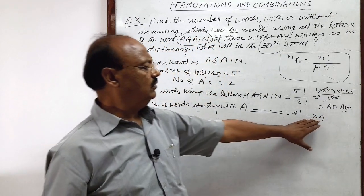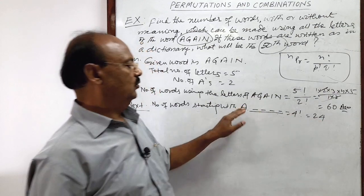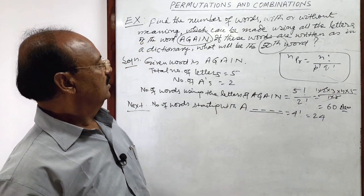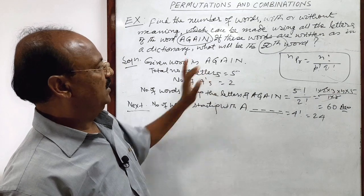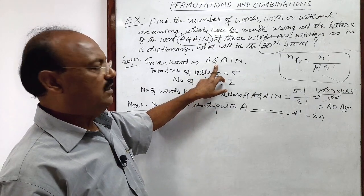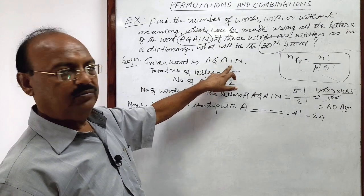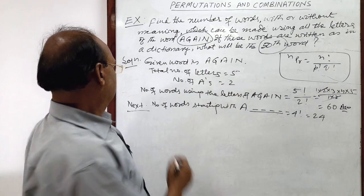24 words can start with A. Now, which letter is there? After A, G. As per dictionary, alphabetically, after A, G will come, then I will come, then N alphabetically.